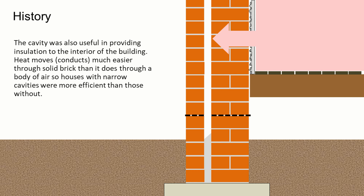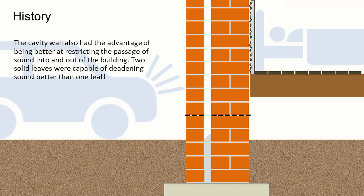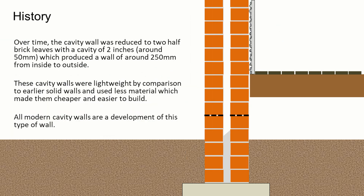Heat moves much easier through solid brick than it does through a body of air, so houses with narrow cavities were slightly more efficient than those without them. The cavity also had the advantage of better restricting the passage of sound into and out of the building — two solid leaves were capable of deadening sound far better than one. Over time, the cavity wall thickness was reduced to half brick leaves with a cavity of around two inches, so 50 millimeters, which produced a wall of about 250 millimeters overall.